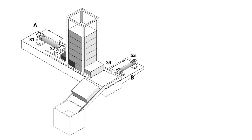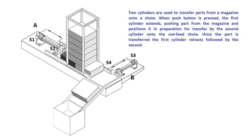This is the problem we are going to discuss. When the push button is pressed, the first cylinder extends, pushing a part from the magazine and positioning it in preparation for transfer by the second cylinder onto the output tube. Once the part is transferred, the first cylinder retracts followed by the second.